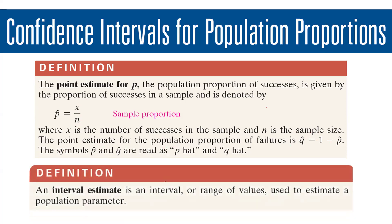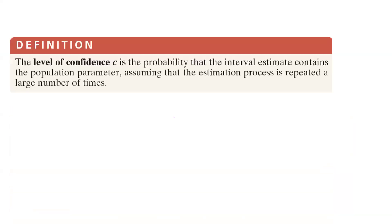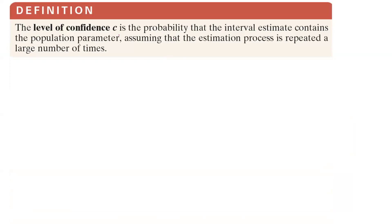An interval estimate is an interval or range of values used to estimate a population parameter. We are interested in finding all possible values or range of values that estimate the population parameter — in this case, population proportion. We also need the level of confidence, denoted by C, which is the probability — represented as the area below the curve — that the interval estimate contains the population parameter, assuming that the estimation process is repeated a large number of times.